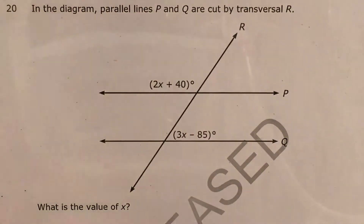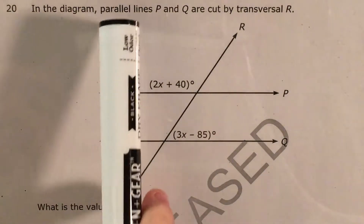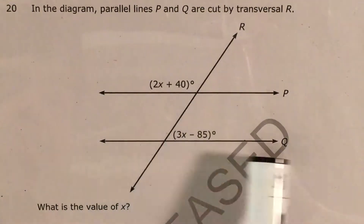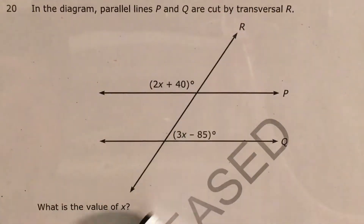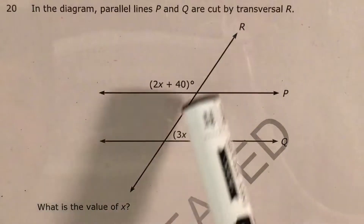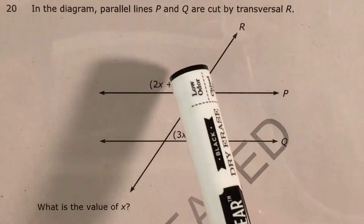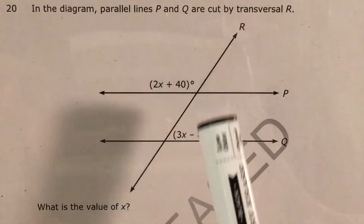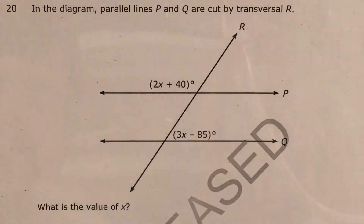The question gives us a diagram and tells us that parallel lines P and Q are cut by transversal R. We're supposed to find the value of x, knowing that this big angle is 2x plus 40 degrees, and this small angle is 3x minus 85 degrees.